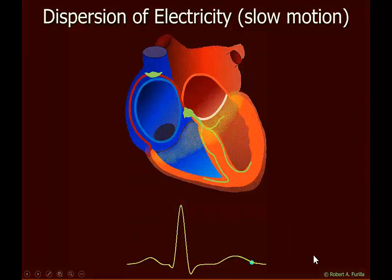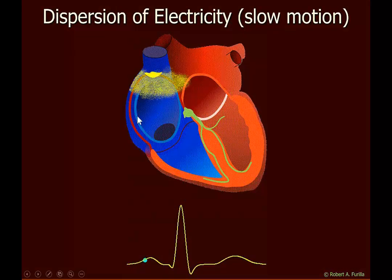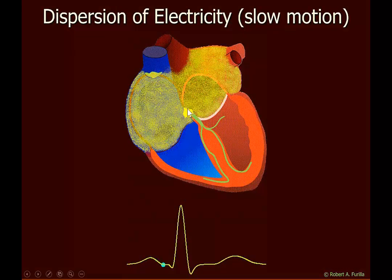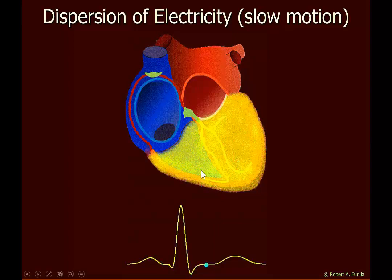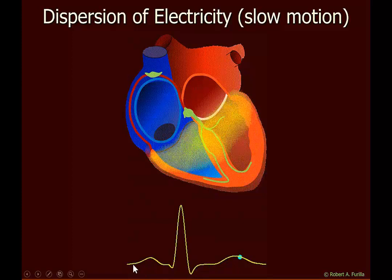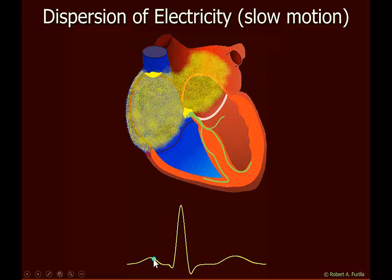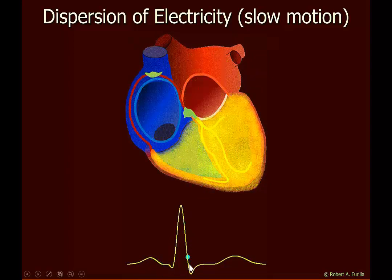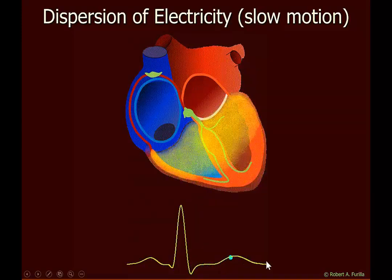Now we're looking at the dispersion of electrical activity: the SA node, atria contracting, slow down through the AV node, ventricles contracting, and relaxing. We can see the atria contracting — there's our P wave. Ventricles contracting — QRS — stay contracted — now relaxation, repolarization, back to rest.